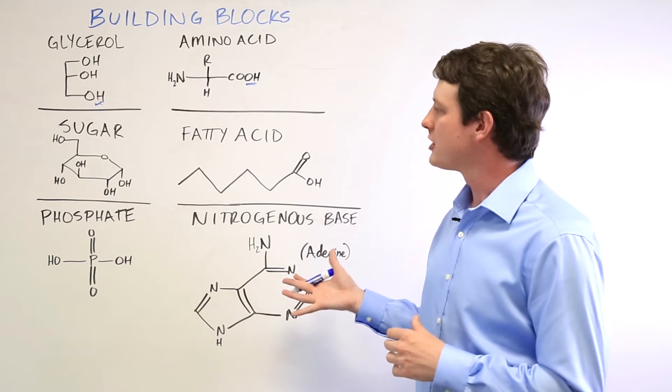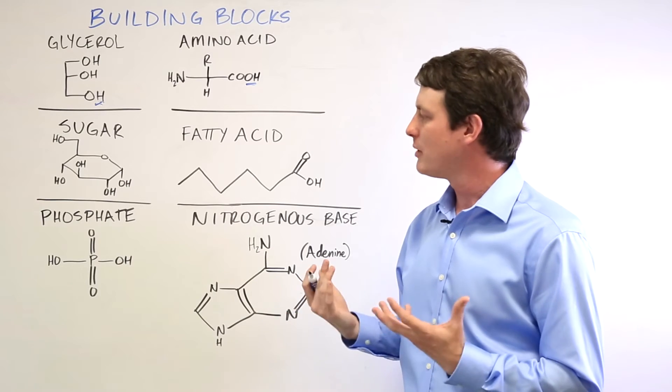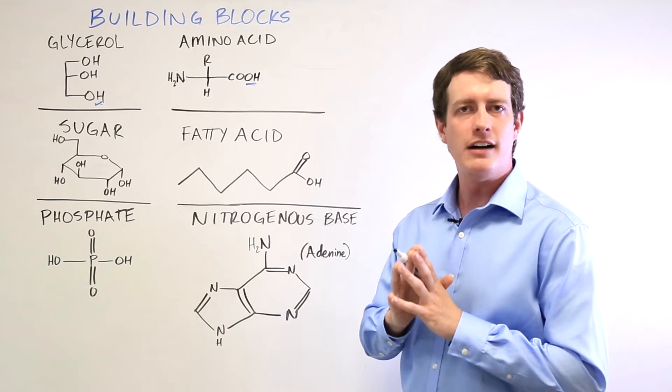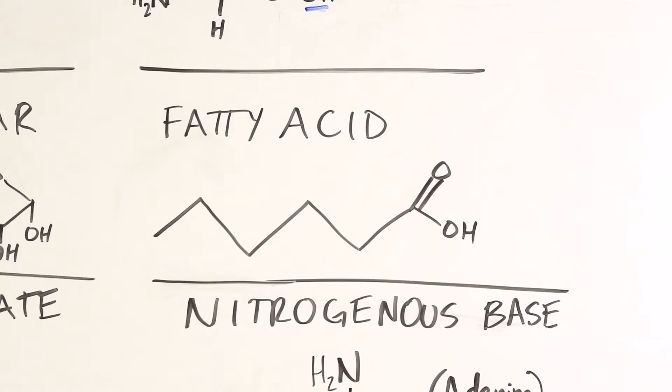And if you take nitrogenous bases combined with a sugar and phosphate backbone, then you have the makings of DNA and RNA, which is how we store all of our genetic information.